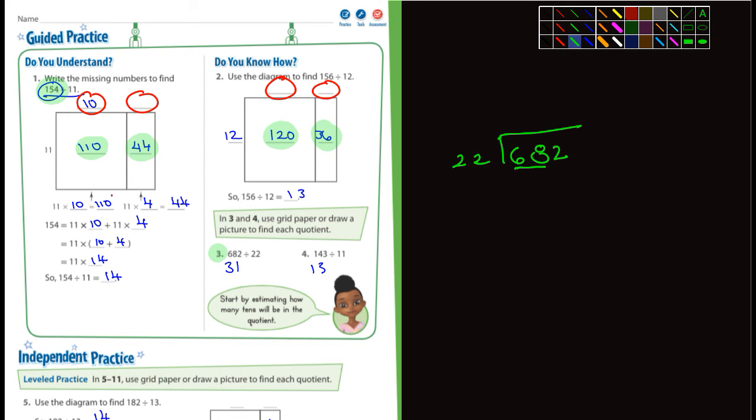What times 22 is pretty close to 68 without going over? So 22 times 3 is 66. So that's not greater than 68, so that works. And then you just subtract. There's two left over. Then you bring down the other number, and that's 22. How many times does 22 go into 22? Well, it fits perfectly once with nothing left over. And you add that one in. And then you can see what I did here. The answer is 31, which is what we have right here.